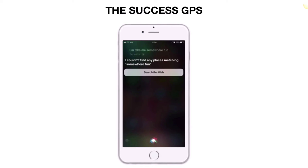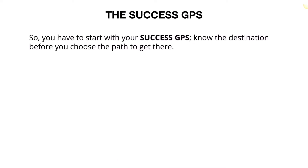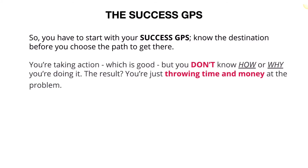You need to build a process to get you there. You need to identify where you want to go. If you were to tell Siri 'take me somewhere fun,' it wouldn't be able to take you anywhere — you haven't given it any directions or clarity. If you treated your business this way, you'll get lost and waste lots of money. So you have to start with your Success GPS: know the destination before you choose the path to get there. You're taking action, which is good, but you don't know how or why you're doing it — and the result is you're just throwing time and money at the problem.